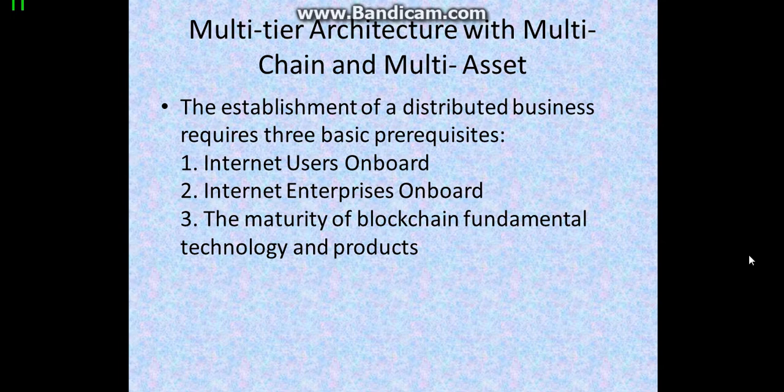The first point is multi-tiered architecture with multi-chain and multi-assets. The establishment of a distributed business requires three basic prerequisites: internet users on board, internet enterprises on board, and the maturity of blockchain fundamental technology and products.